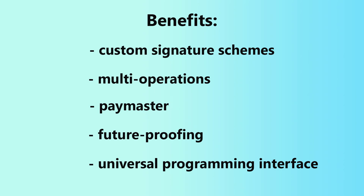Benefit number two: multi-operations or atomic operations. With this architecture, you can batch together multiple user operations into a single transaction. For example, to transfer an ERC-20 token on someone else's behalf, you would normally have to call the token's approve function, followed by the transfer from function in two separate transactions. With account abstraction, this can all be done in one step, greatly simplifying things for the user.